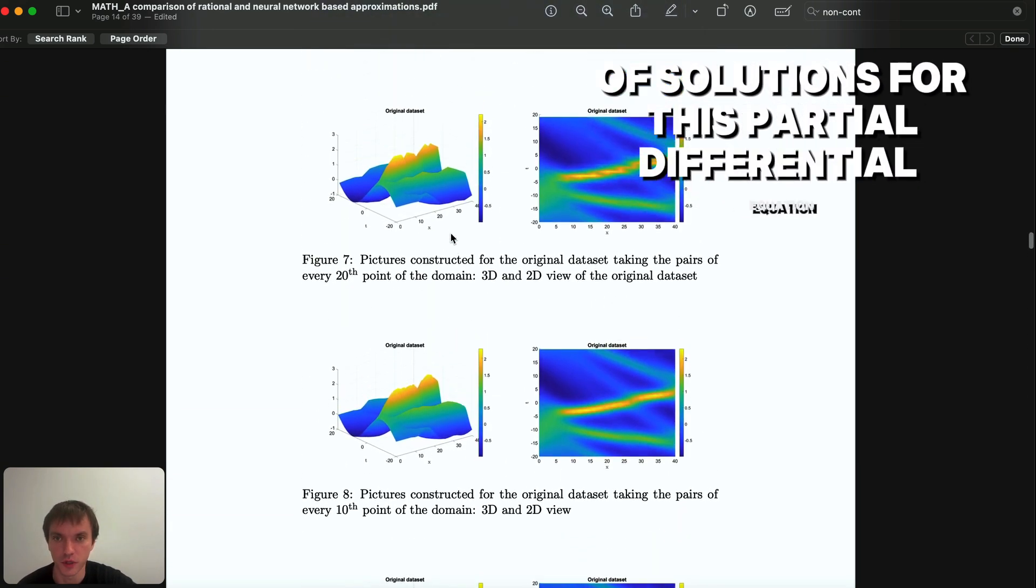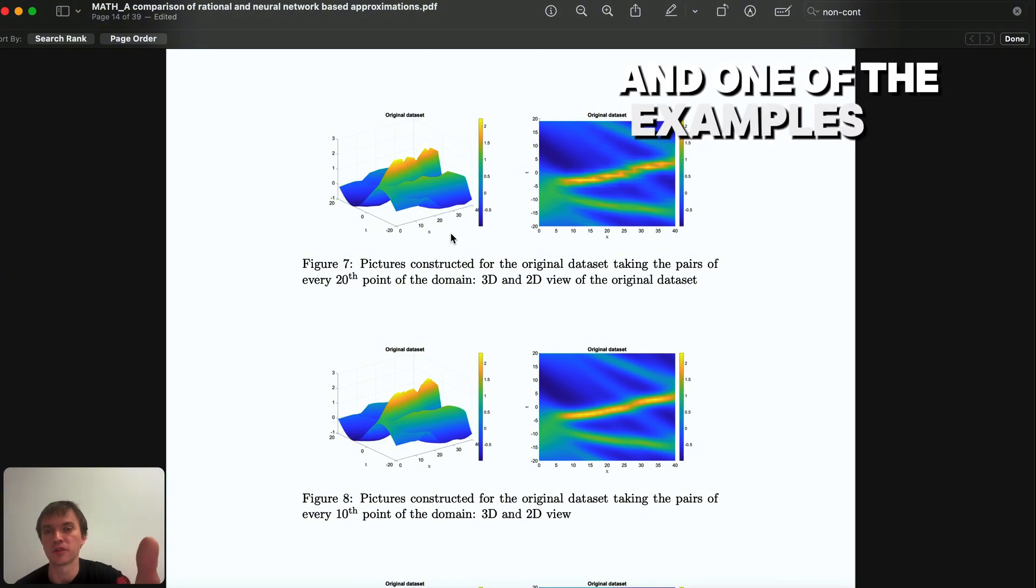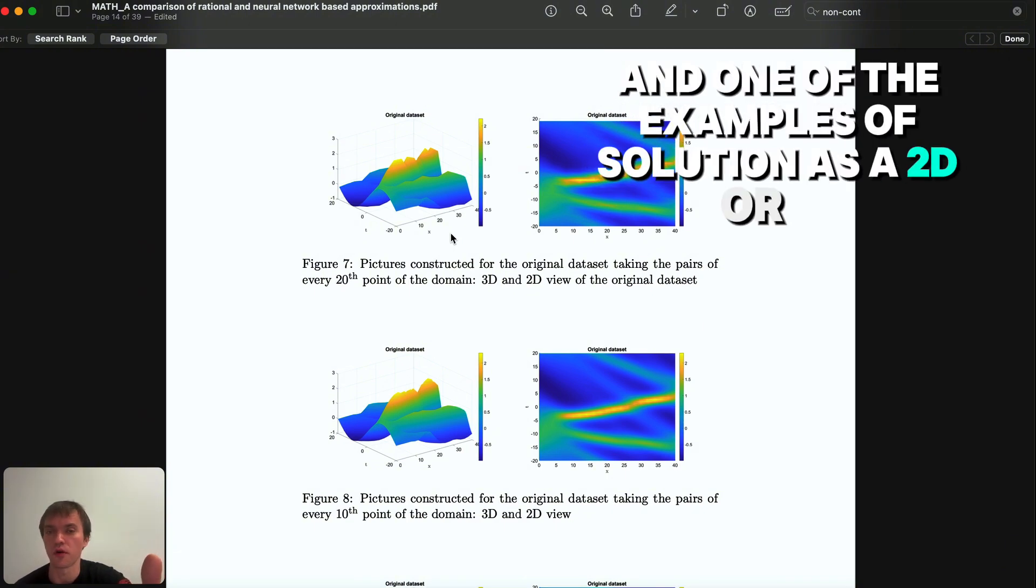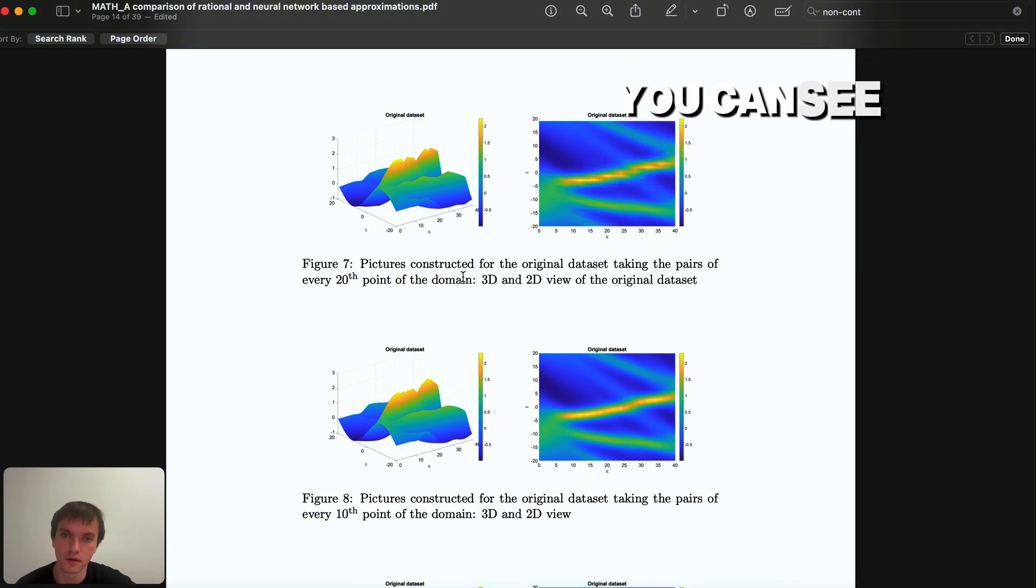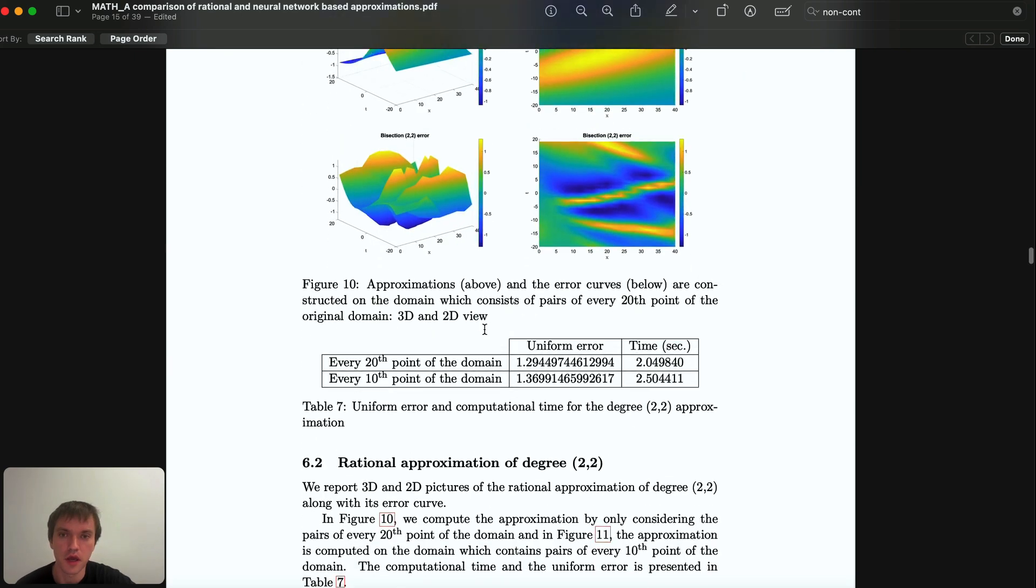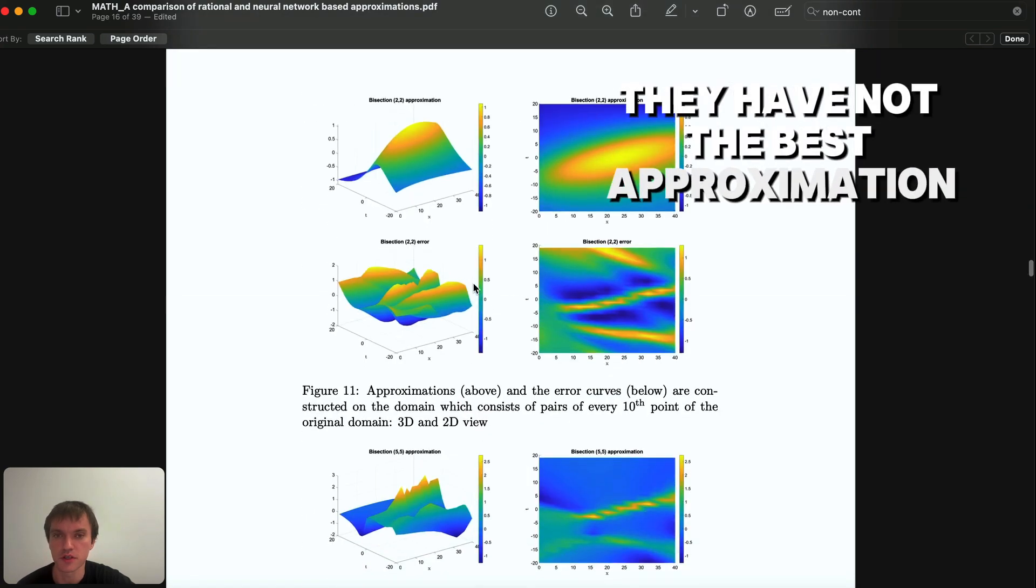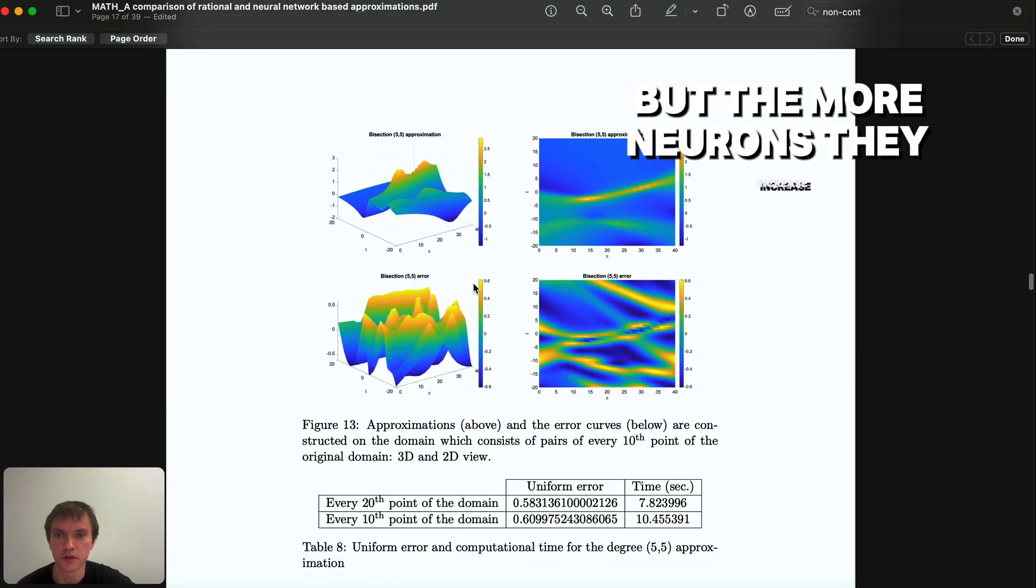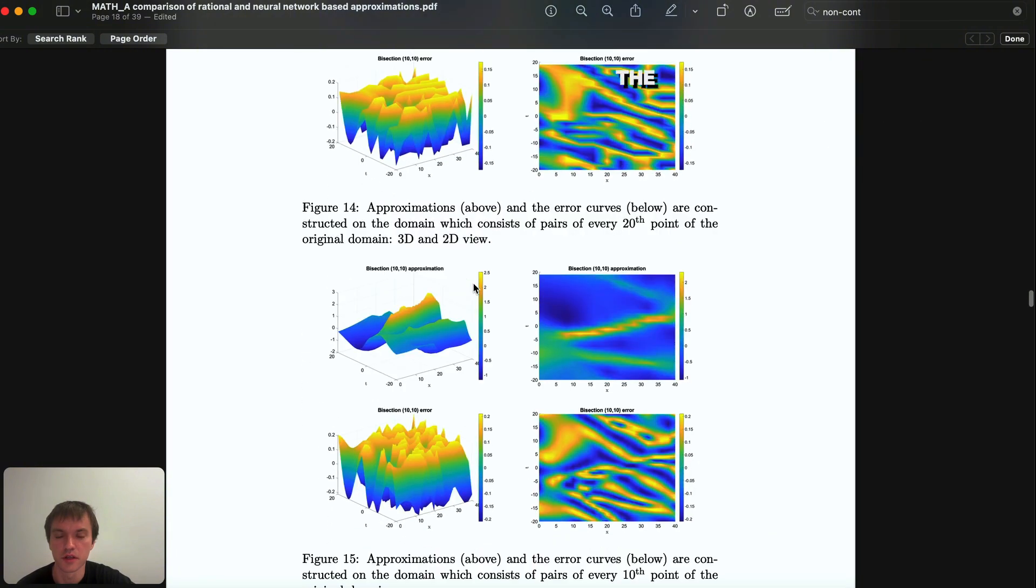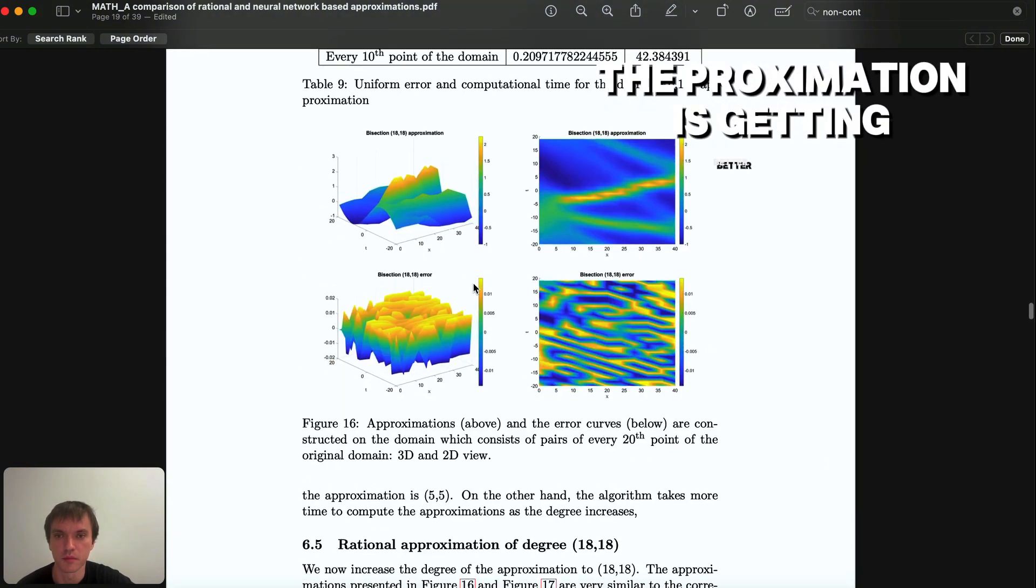One of the examples of the solution as a 2D or 3D you can see on this picture right now. For a smaller amount of neurons they have not the best approximation, but the more neurons they increase, as you can see, the approximation is getting better and better.